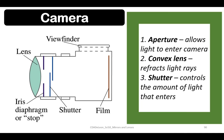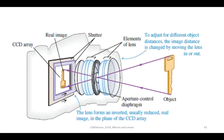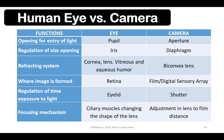A camera is another type of optical instrument. The aperture allows light to enter the camera. The convex lens refracts light rays, and the shutter controls the amount of light that enters. The diaphragm changes the size of the aperture, and the film is the screen where the image is formed. These are the comparisons between the human eye and the camera.